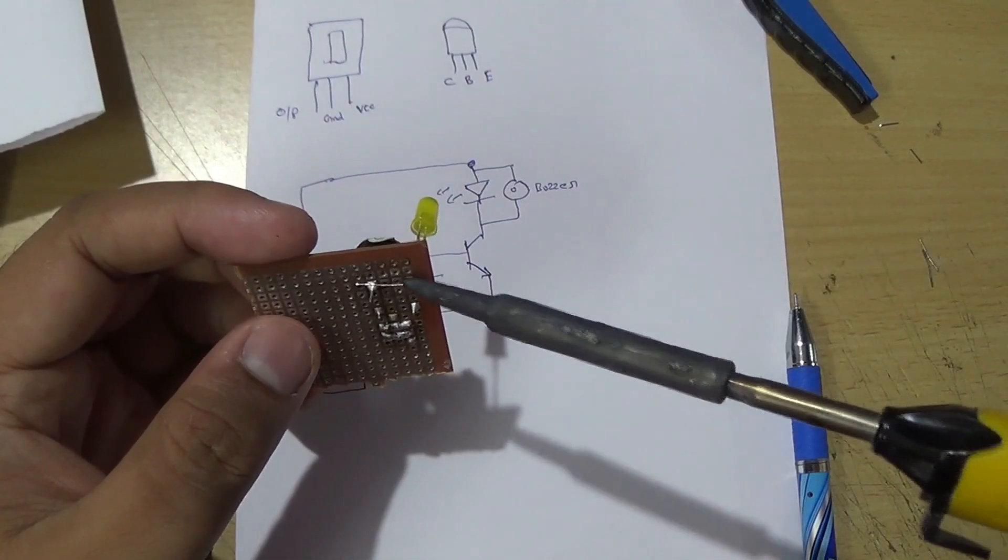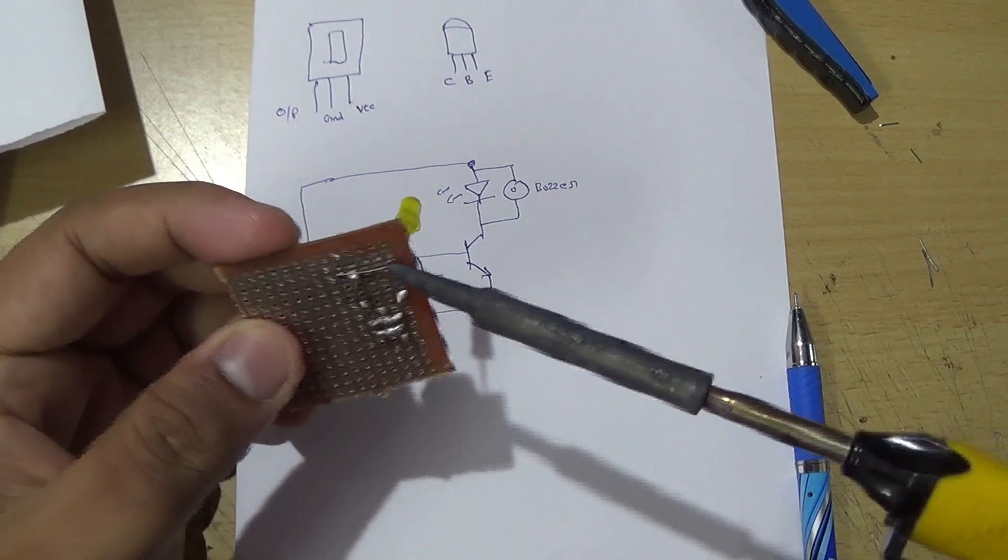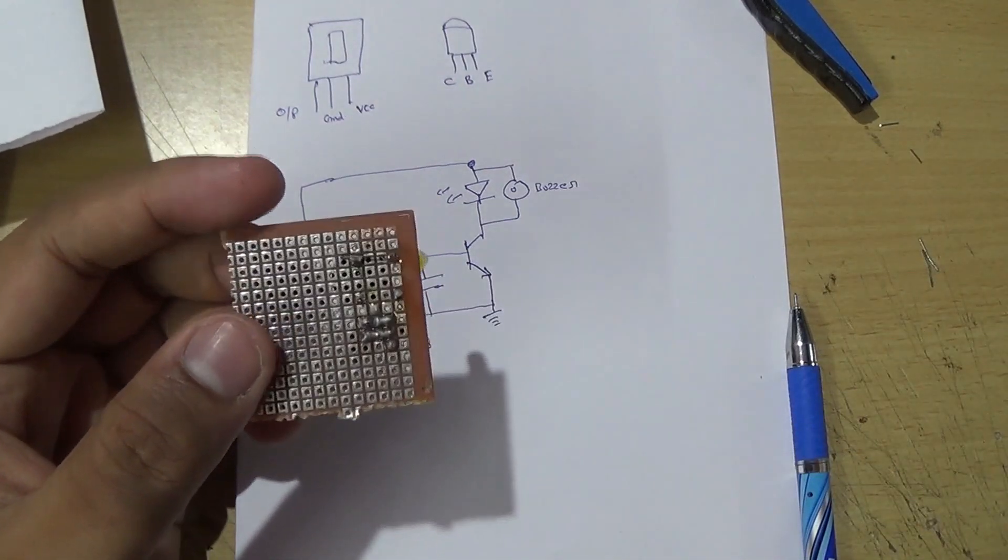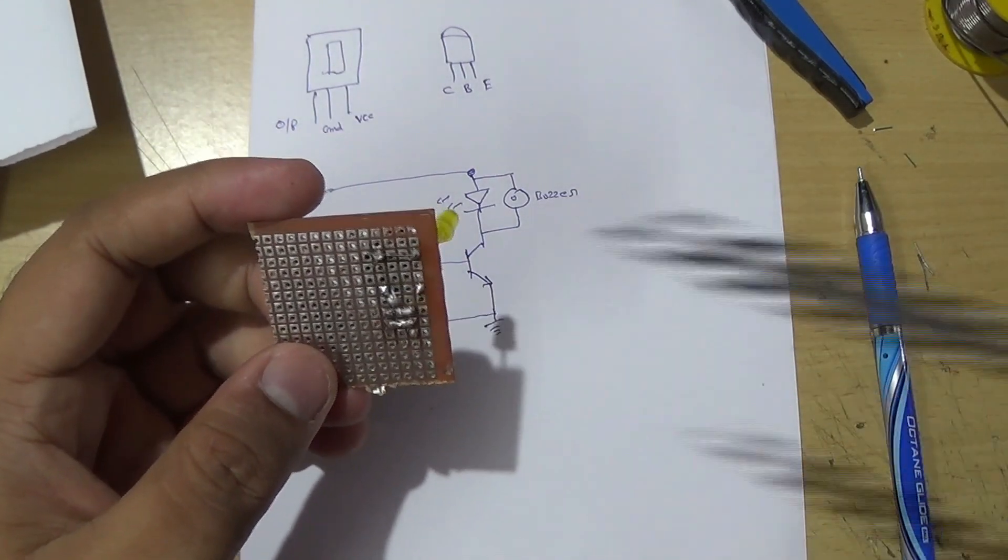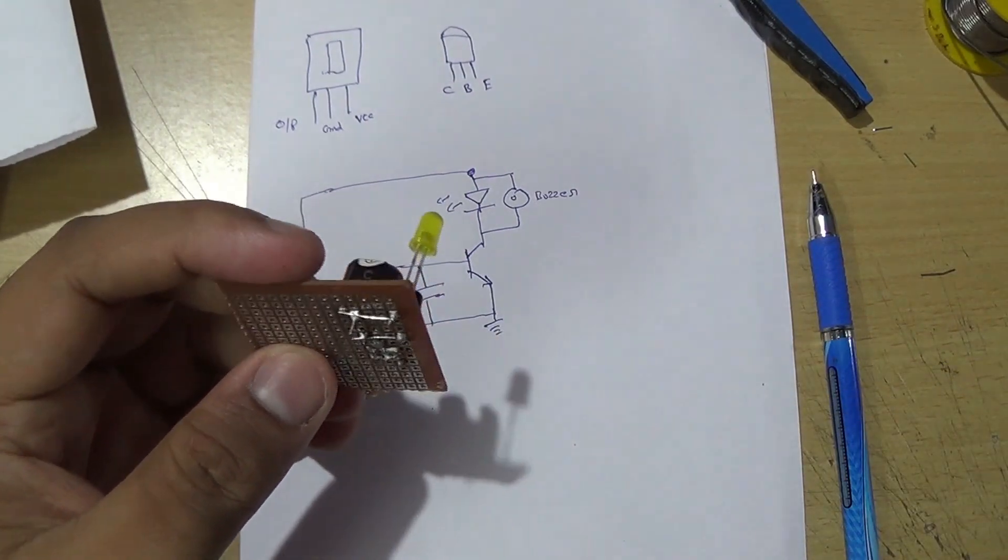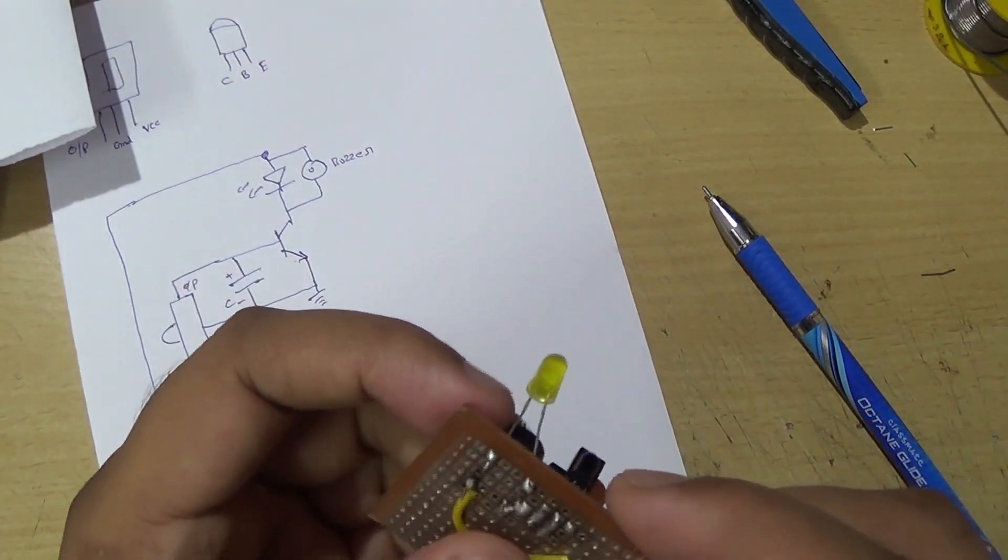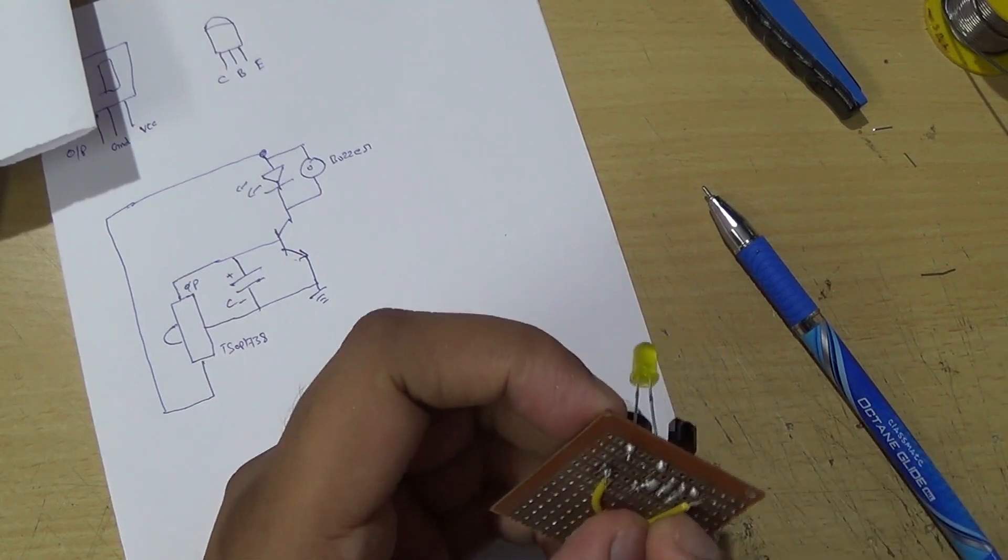Here I am joining the anode of the LED and the positive terminal of the buzzer and cathode of the LED, negative terminal of the buzzer to collector terminal.